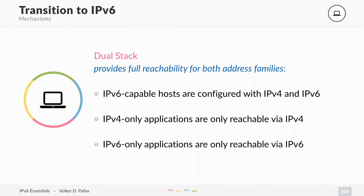If you have dual stack, you have full reachability for both address families — that's a perfect setup. If you have IPv6-capable hosts, they are configured with IPv4 and IPv6 addresses. If you have IPv4-only applications, they can still be reachable via IPv4, but if you have new IPv6-only applications, they are still reachable via IPv6. So it's really the perfect setup.